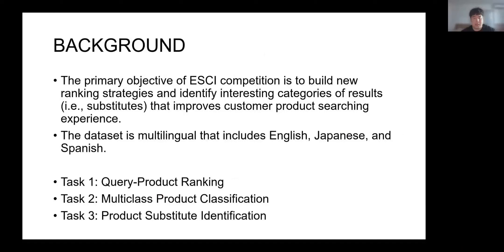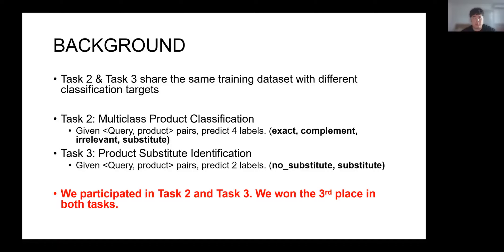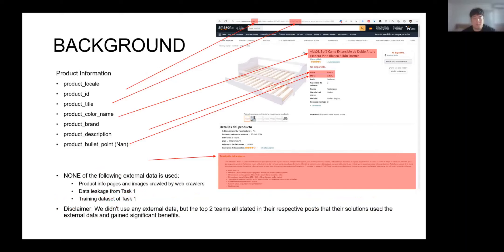There are three tasks in this competition. Task 2 and 3 share the same training dataset with different classification targets. Task 2 is multi-class product classification — we predict four different labels: exact, complement, irrelevant, and substitute. Task 3 is product-substitute identification — we predict two labels: no substitute and substitute. We joined Task 2 and 3, and won the third prize in both tasks.